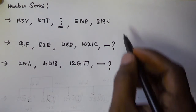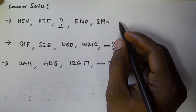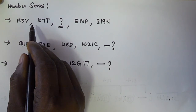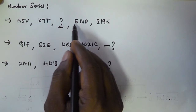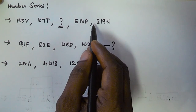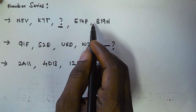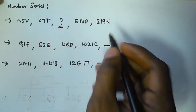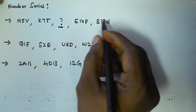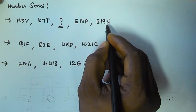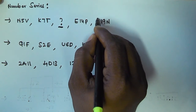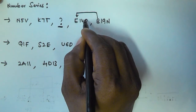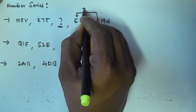So we look at the first problem. We have N, K, something, E, and B. I will go from right to left. B to E: B, C, D, E — so that is plus 3.